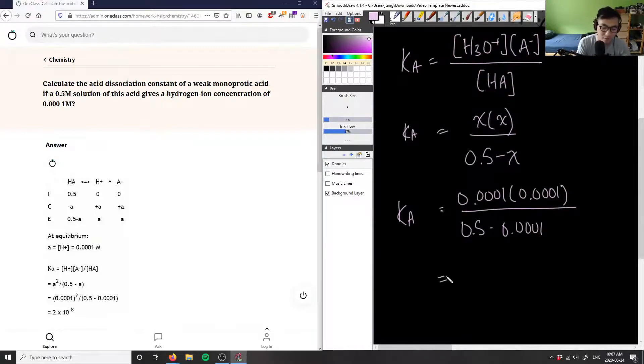So I have 0.0001 squared because I'm multiplying it by itself. I'm going to get 1 times 10 to the negative 8 here.